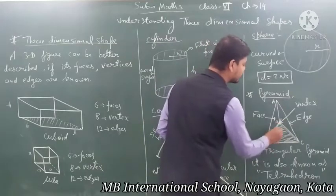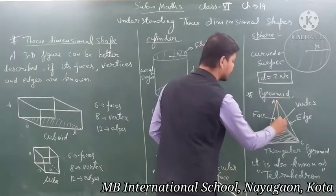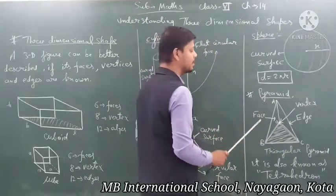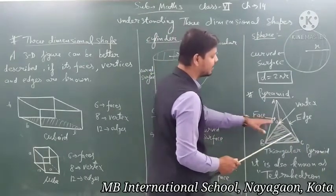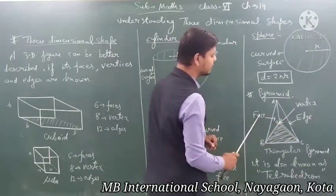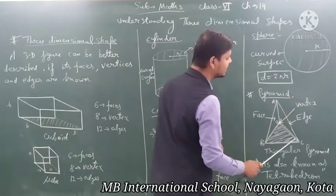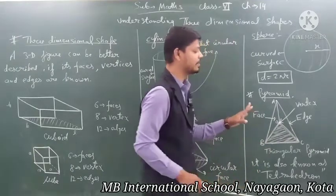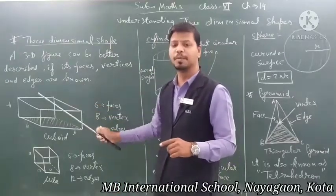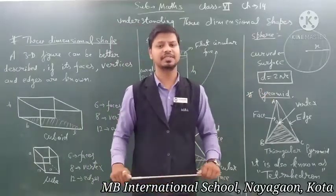To draw a triangular pyramid, first draw a triangle at the base, then place a point O at the top, and join O to vertices A, B, and C. This forms your pyramid. The pyramid has 4 faces — 3 side faces and 1 bottom face. The point O is the vertex, and the lines are the edges. These are the examples of 3D figures: cube, cuboid, cylinder, cone, sphere, and pyramid. Hope you understand this video, thank you.